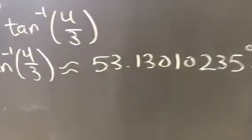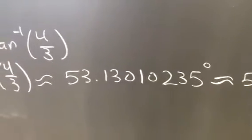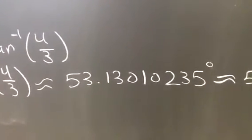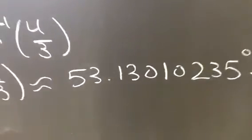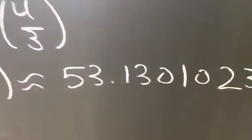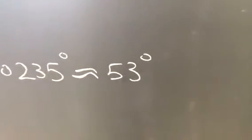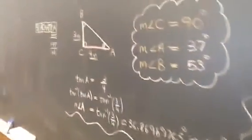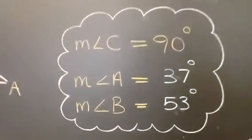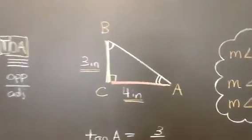And the right-hand side becomes the tan inverse of 4 thirds, which the calculator gives me this gorgeous-looking decimal number, 53.13010235 degrees. But this 0.1 is not enough to round up the 53 to a whole number of 54. So I say that angle B is approximately 53 degrees. And as long as 53 degrees is complementary with 37, I'm safe. And lo and behold, I'm safe.